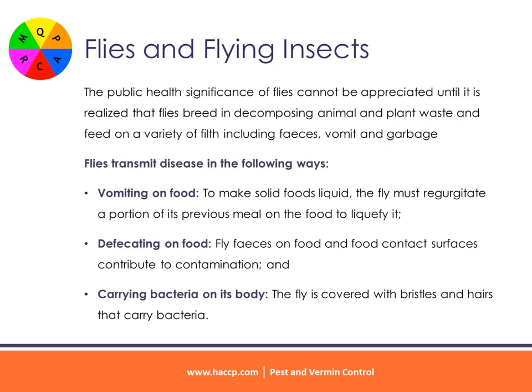Flies and Flying Insects. The public health significance of flies cannot be appreciated until it is realized that flies breed in decomposing animal and plant waste and feed on a variety of filth including feces, vomit and garbage. Flies transmit disease in the following ways: vomiting on food — to make solid foods liquid, the fly must regurgitate a portion of its previous meal on the food to liquefy it; and defecating on food — fly feces on food and food contact surfaces contribute to contamination.